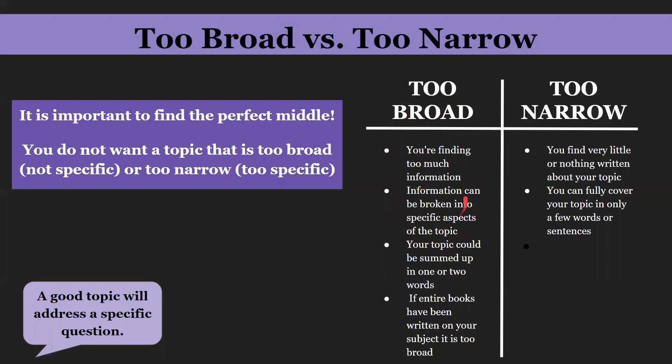Another sign of too broad is that the information can be broken into specific aspects of the topic. If I looked up dogs for a research paper and then realized there are like a million different kinds of breeds, that means my topic can be broken into a ton of different topics — so it is not specific enough.